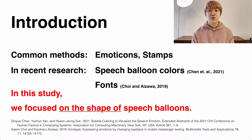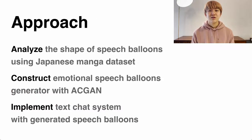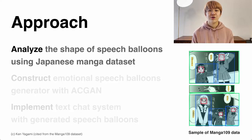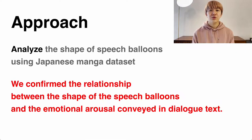In this study, we focused on the shape of speech balloons, which are always used in text chatting but do not function as emotional cues in present applications, and confirmed their effects on emotional communication in text chats. Since speech balloons are traditionally used in Japanese manga to enhance characters' expressions, we began our research by analyzing speech balloon shapes in the Japanese manga dataset Manga109, and confirmed the relationship between the shape of speech balloons and the emotional arousal conveyed in the dialogue text.